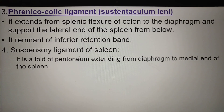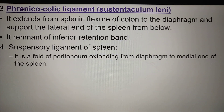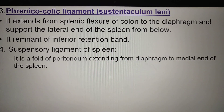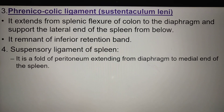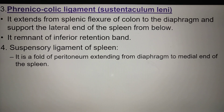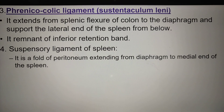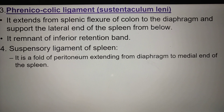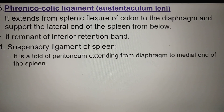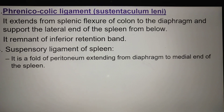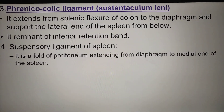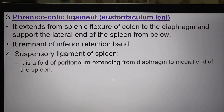The third ligament is the phrenicocolic ligament, also called the sustentaculum lienis. It extends from the splenic flexure of the colon to the diaphragm. It does not attach to the spleen but supports the lateral end of the spleen. It is a remnant of the inferior retinacula band. The fourth is the suspensory ligament of the spleen, a fold of peritoneum extending from the diaphragm to the medial end of the spleen.